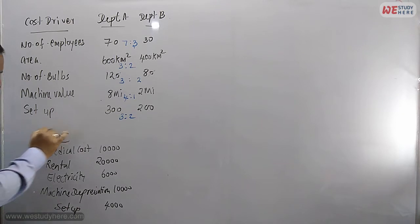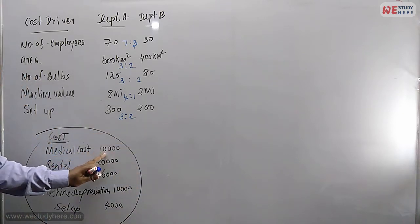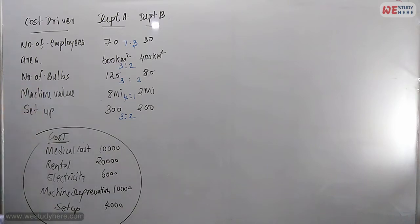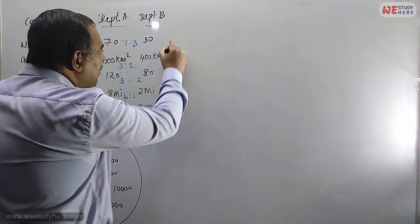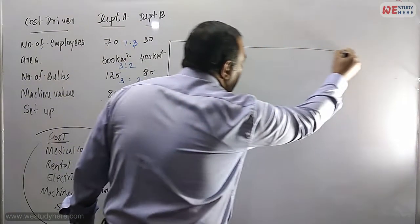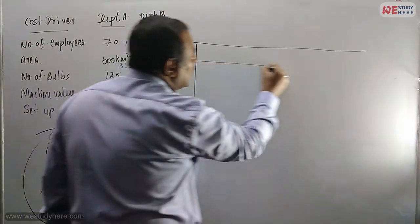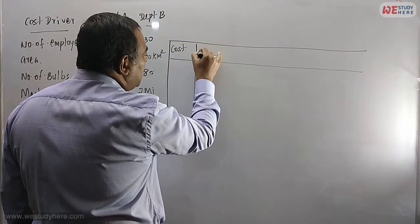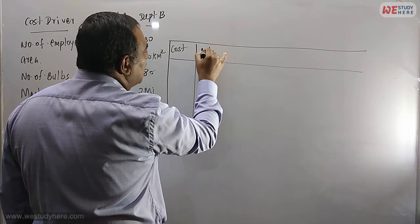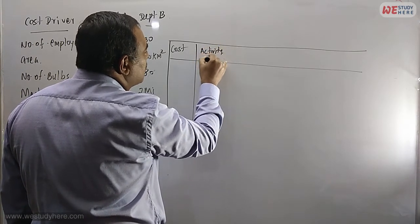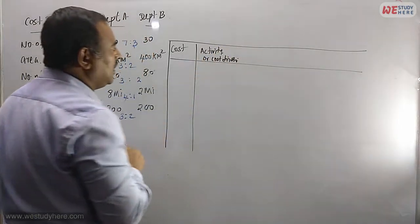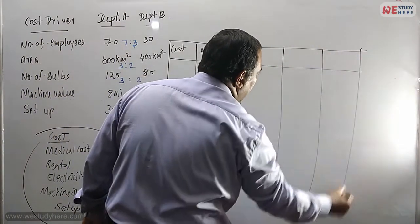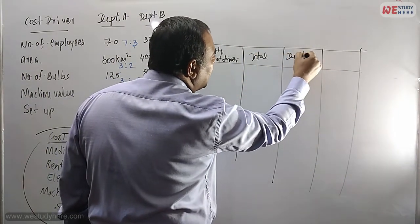Now we have the costs here. Using this cost — medical cost is 10,000 — we need to find out how much goes to Department A and how much to Department B. We are now making the allocation table with columns: cost, cost driver, total, Department A, and Department B.